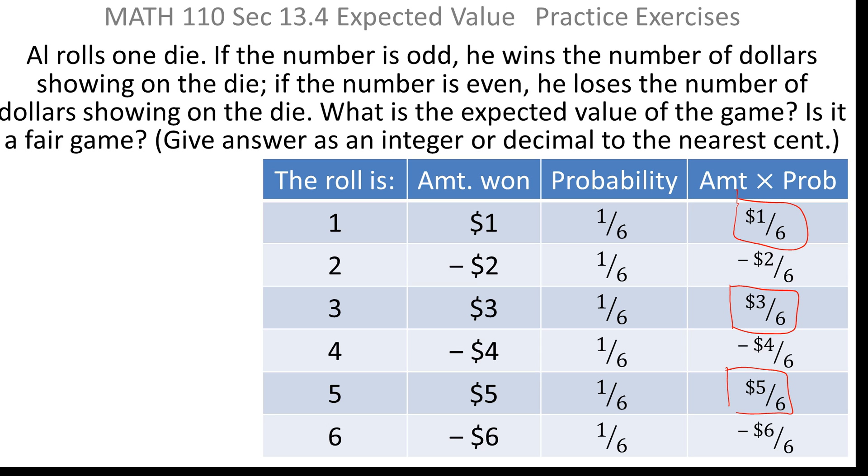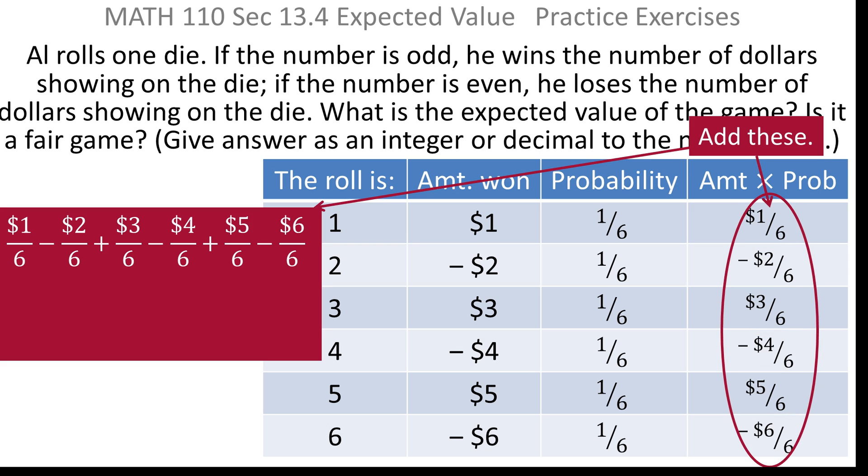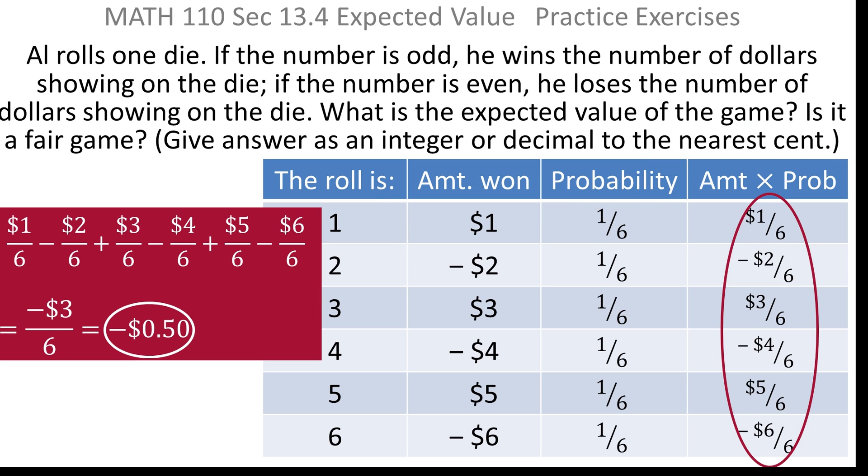So we want to add those all up, and we'll have the expected value. You have positive one-sixth, minus two-sixths, plus three-sixths, minus four-sixths, plus five-sixths, minus six-sixths. And that ends up being, if you just add one minus two, plus three, minus four, plus five, minus six, you end up with negative three.